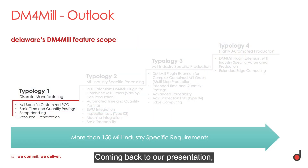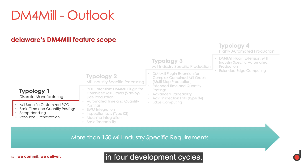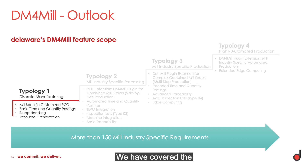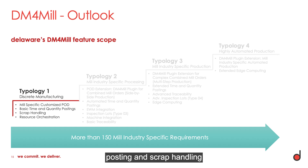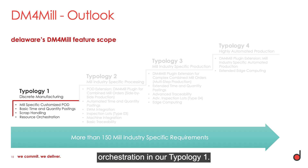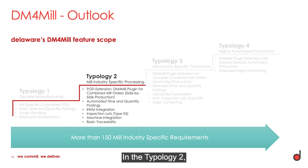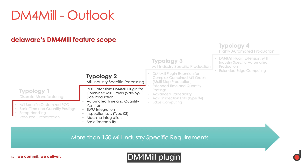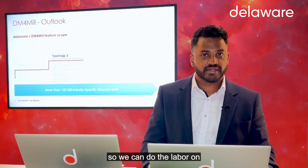Coming back to our presentation, this development is separated into four development cycles with four typologies. In typology one, we covered the customized portal, basic time and quantity posting, scrap handling, and resource orchestration. In typology two, we developed the DM for Mill plugin, also considering time and quantity posting so we can do labor on and labor off — meaning labor time tracking.